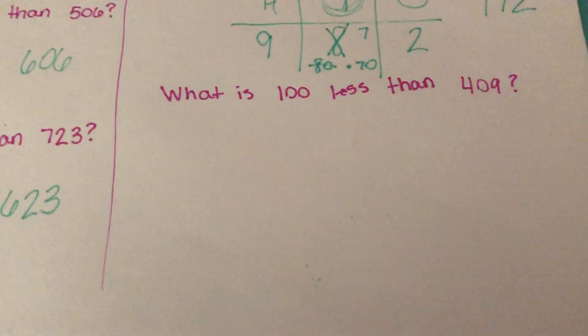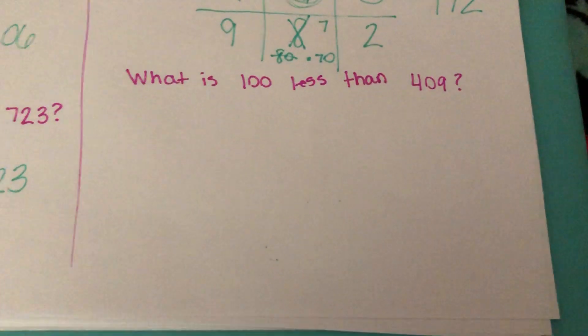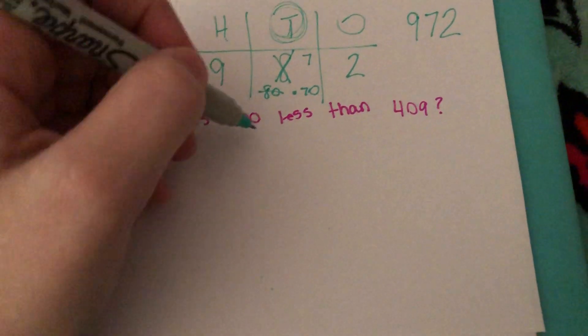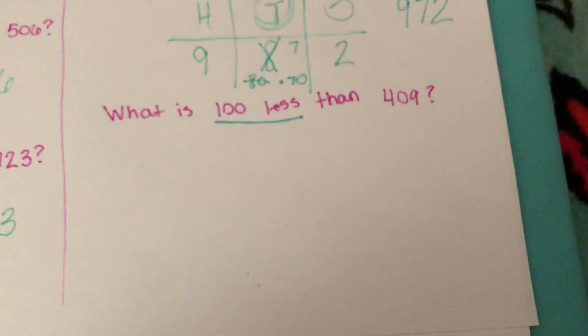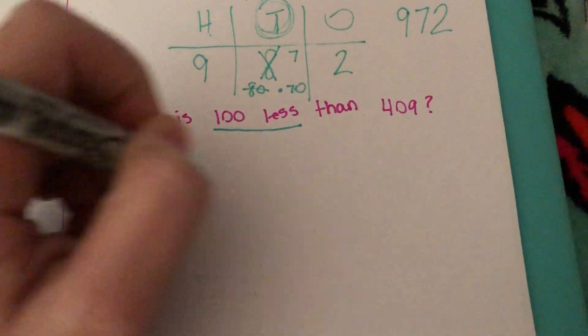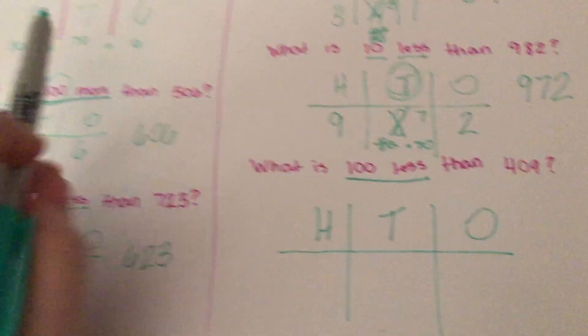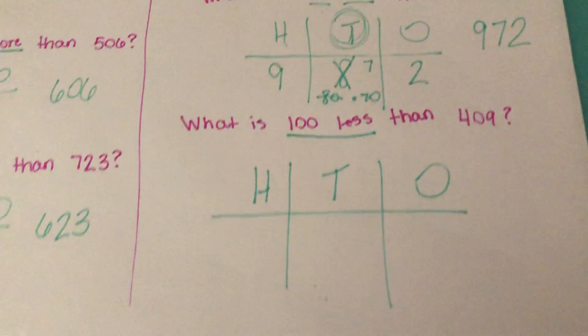And the final question. I apologize. I'm going quick. I just don't want to bore you here. What is 100 less than 409? Well, we're looking for 100 less. We're drawing our place value chart, our H-T-O. Please don't make your students write these words out. It will stress them out and waste their energy.